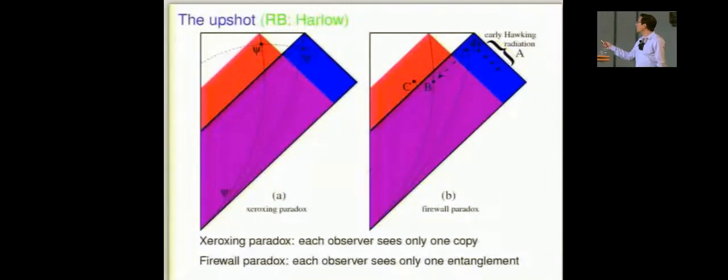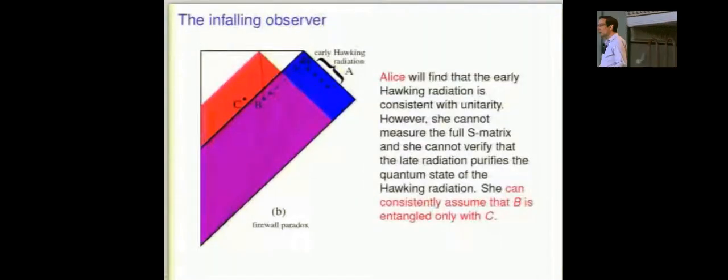So this is the work of Dan Harlow and my own work independently of each other. And I'll give you the upshot first. And the upshot is easy to convey by just drawing an analogy with the resolution of the Xeroxing paradox. That's here on the left. Here's the inside copy of psi. Here's the outside copy of psi. Each observer, blue and red causal diamond, sees only one copy. The resolution of the firewall paradox is going to be that each observer sees only one entanglement. Here we have two incompatible entanglements. Each observer can actually only verify one.